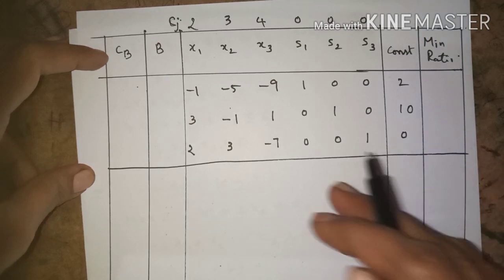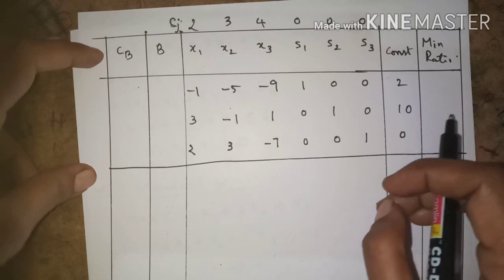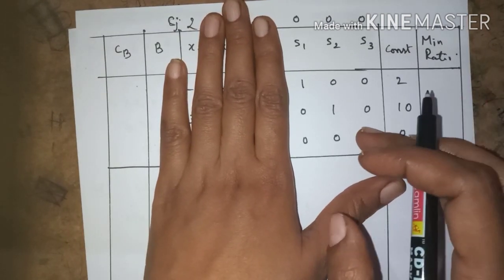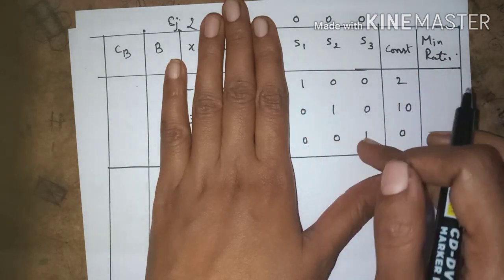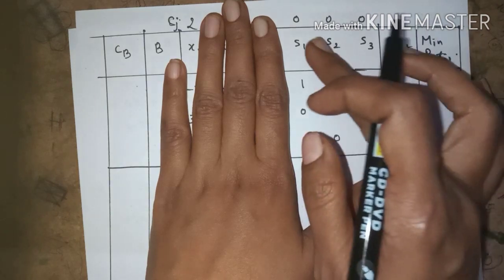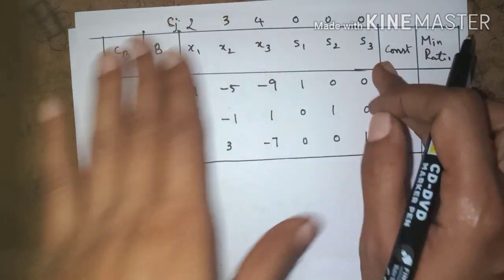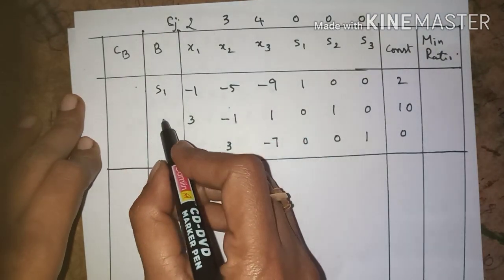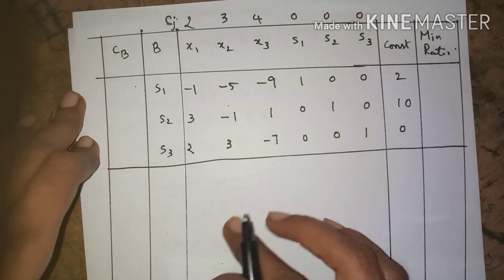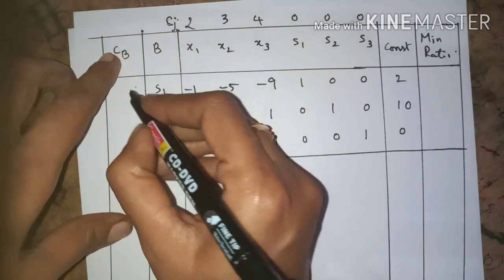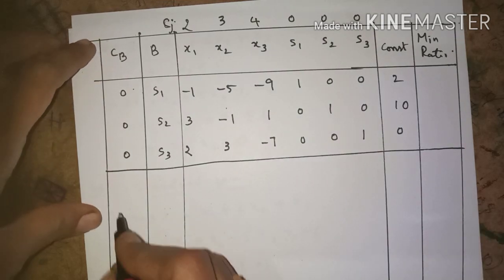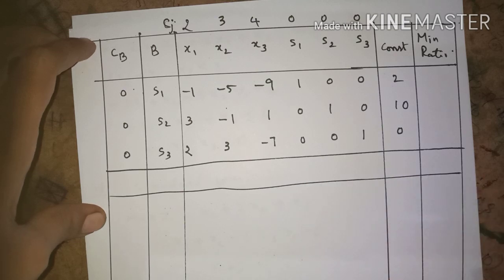Next, we fill the basic variables and cb column. The basic variables are identified where we get an identity matrix. Closing off x1, x2, x3 columns, we get an identity matrix under s1, s2, s3 — so s1, s2, s3 form the basis. Their coefficients in the objective function are all 0, so cb = 0, 0, 0.